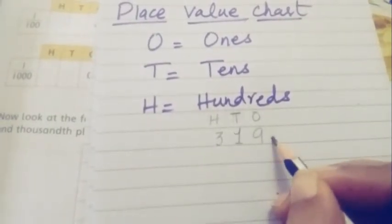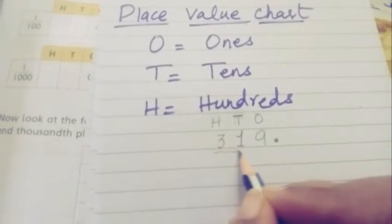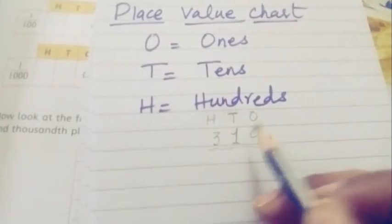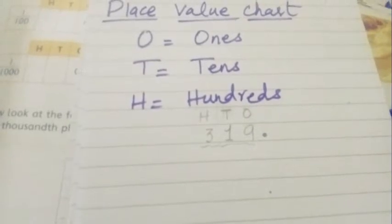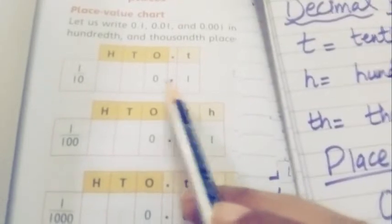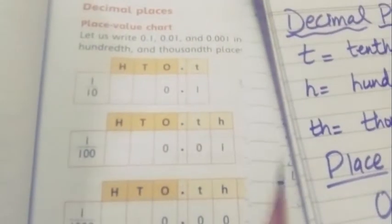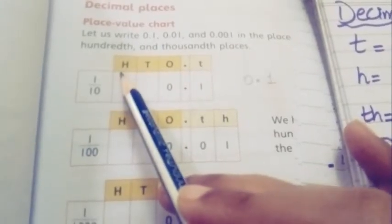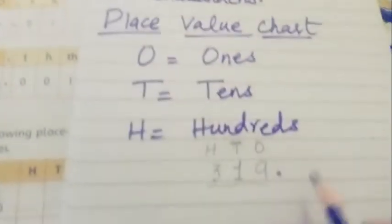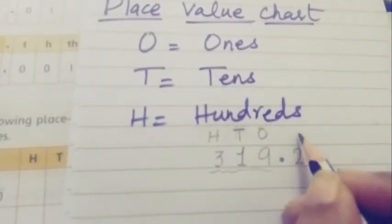When a decimal point is placed here, the first number after the decimal point will have a specific place value. The whole number part has place values: 1, 10, 100. After the decimal point, the first number's place value is tenths.